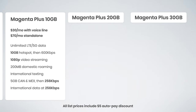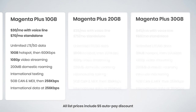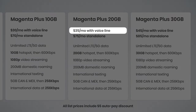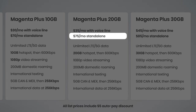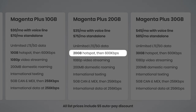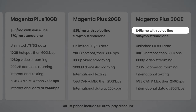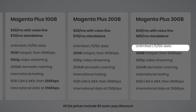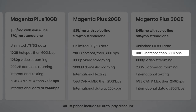There are two other options of the Magenta Plus plan: Magenta Plus 20 gigs and Magenta Plus 30 gigs. The main differences are the price and hotspot data. Magenta Plus 20 gigs is $35 a month with a voice line, or $75 standalone, with hotspot increasing to 20 gigs. Magenta Plus 30 gigs is $45 a month with a voice line, or $85 standalone, and you get 30 gigs of high-speed hotspot data.